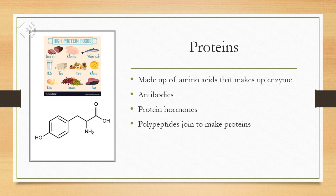Protein that we consume will provide antibodies and create protein hormones. Some examples of high protein foods include beef, chicken, fish, milk, tofu, beans, cheese, eggs, and tuna.